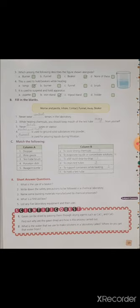Now match the following. Column A. First one is given dropper. Dropper is to add liquid drop by drop. Second, wire gauge. It is used to support containers while heating. Test tube brush to clean test tubes. Fourth, porcelain dish to evaporate liquids or concentrate solution. Fifth, reagent bottles to store strong chemicals.